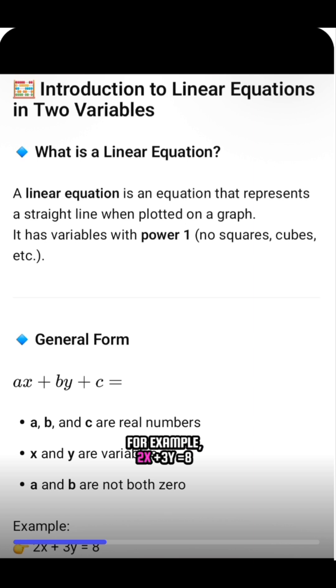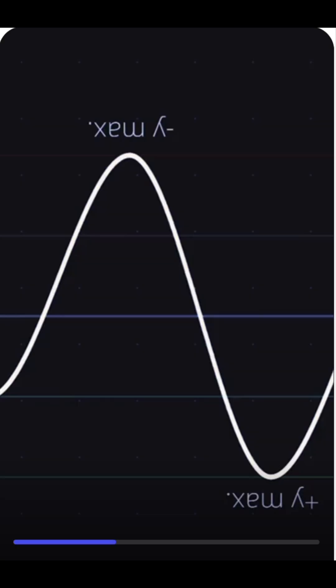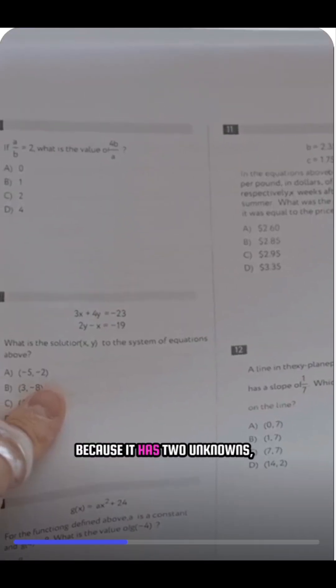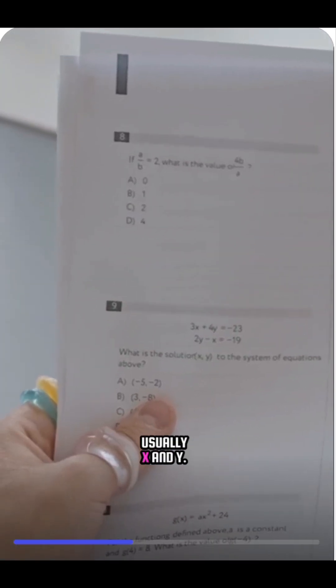For example, 2x plus 3y equals 8 is a linear equation. Now, why do we call it two variables? Because it has two unknowns, usually x and y.